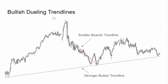This is a bullish dueling trend channel line. They have a very strong bull channel connecting all the lows — there are three points: one, two, and three. We have another smaller bearish channel line into the bull channel line. We can see the bulls get the strong channel line break, retest, and go.